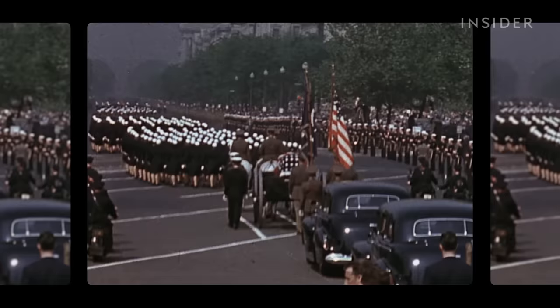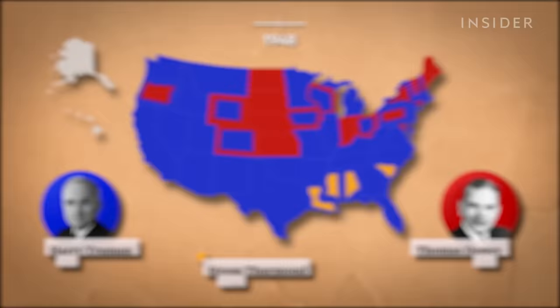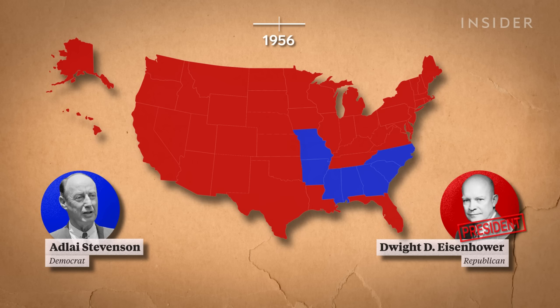FDR dies in 1945. Vice President Harry Truman takes over and then wins the election of 1948. If you were a Truman voter in 1948, what you thought you'd be voting for was, in effect, a third stage of the New Deal. But in 1952, Republican Dwight D. Eisenhower ends 20 years of Democratic rule with two landslide elections in which he only loses the South.